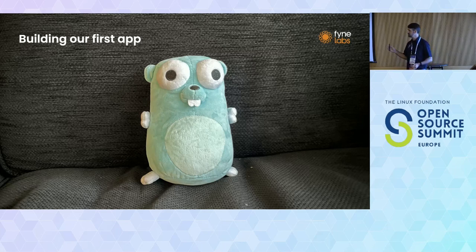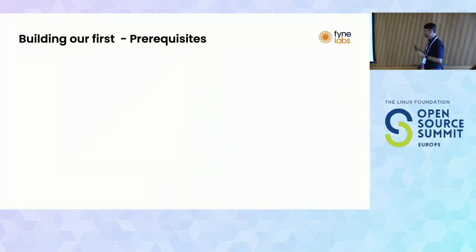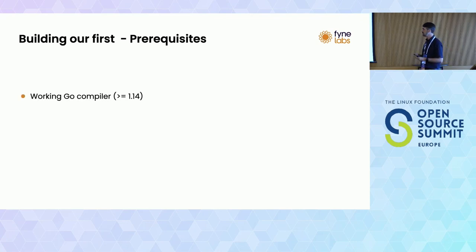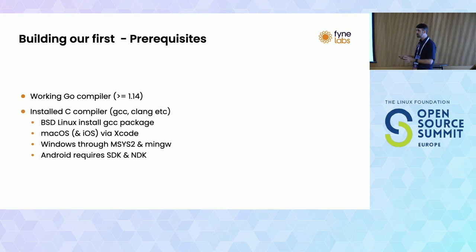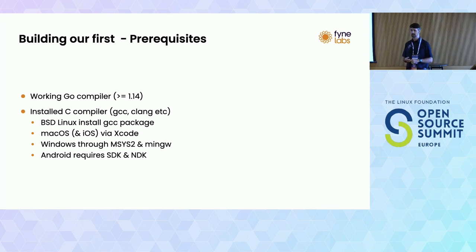He supervises - this time he's going to show us how to build a Hello World application. If you're getting started for the first time, you will need a Go compiler. They've just released 1.19, but we work back to 1.14, mostly because it supports some older devices and it's in all the Linux distributions by default. We're working with graphics, so you're going to need a C compiler. If you're a developer at an open source conference there's a good chance you have all of this set up already, but some platforms have restrictions on how they build and you might need other tools.